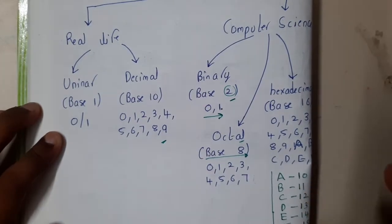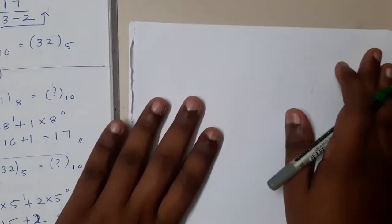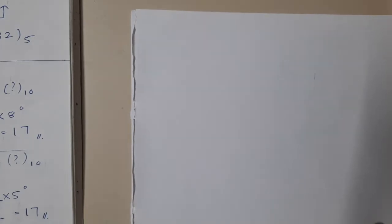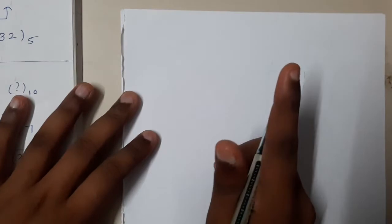Now you have an overview of the number system. Let us start solving some problems so you will understand it clearly. I will be following the exact examples from the book. The first type of conversion we will learn is converting a base 10 number to base 2.